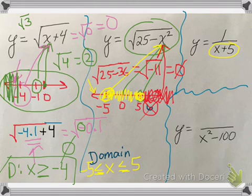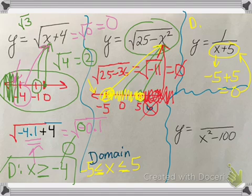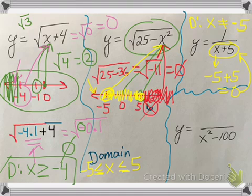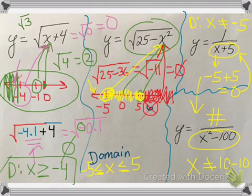The other no-no is we cannot have 0 in the bottom of a fraction. There's only one number that will make the bottom 0: negative 5. If x is negative 5, we get negative 5 plus 5 = 0, and 0 in the bottom of a fraction is bad. So the domain is any number except negative 5. Sometimes it's easier to state what x cannot be. If you look at the next function, there's an x squared in the bottom, so x can't be 10 or negative 10 — a negative times a negative is also positive. That gives us two exclusions for the domain.